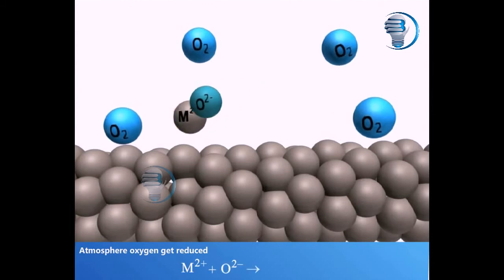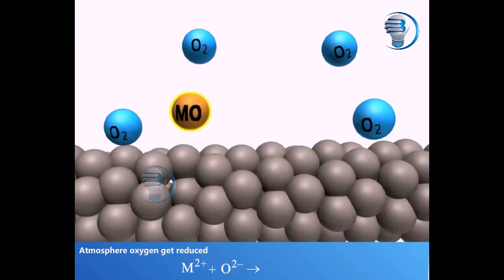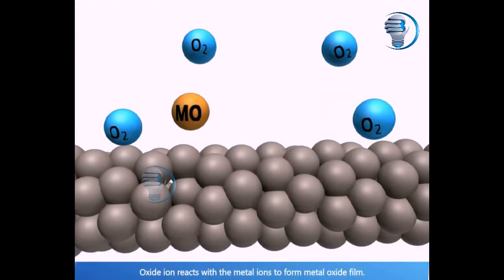M²⁺ + O²⁻ → MO, which forms a film. The oxide ion reacts with the metal ions to form a metal oxide film.